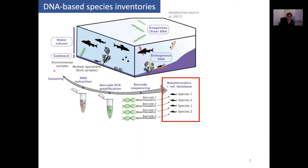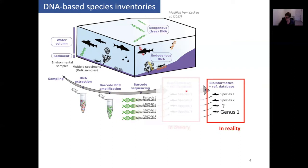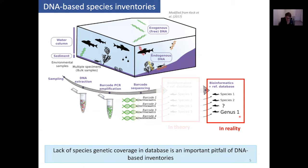DNA-based inventories start with sampling, either from environmental samples for eDNA or multiple specimens for bulk samples. We extract the DNA, PCR-amplify it, and then sequence the barcode. From the list of barcode sequences, we use bioinformatics and a reference database to identify the species present. Ideally, each barcode would have a species match. But in reality, it's hard to find species for every sequence. Some sequences will be completely unknown, and some you can match to maybe a genus or family, but you cannot have the species information.